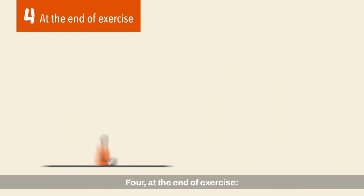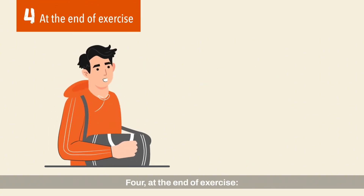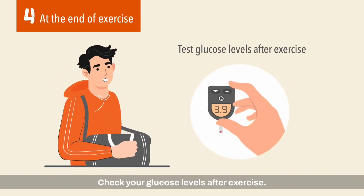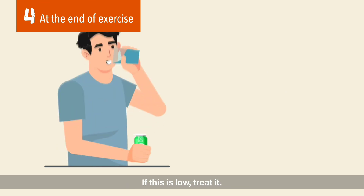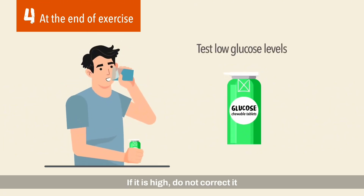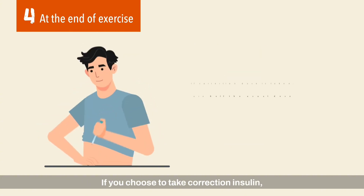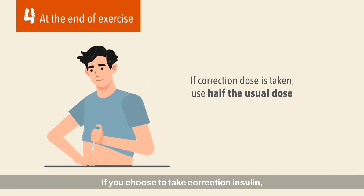At the end of exercise, check your glucose levels after exercise. If this is low, treat it. If it is high, do not correct it, as it will drop once the stress of exercise abates. If you choose to take correction insulin, use half your usual dose.